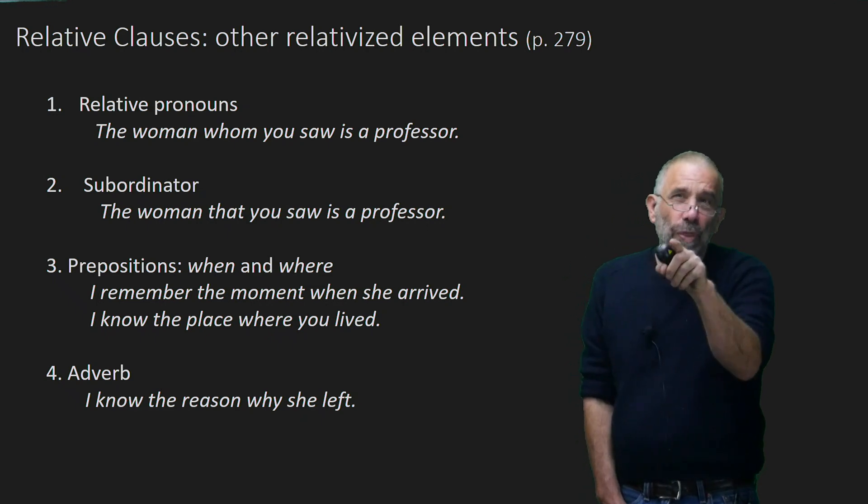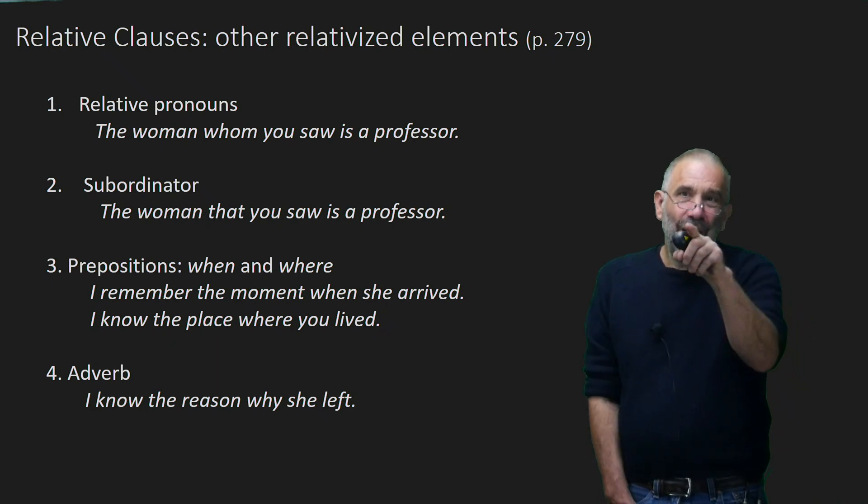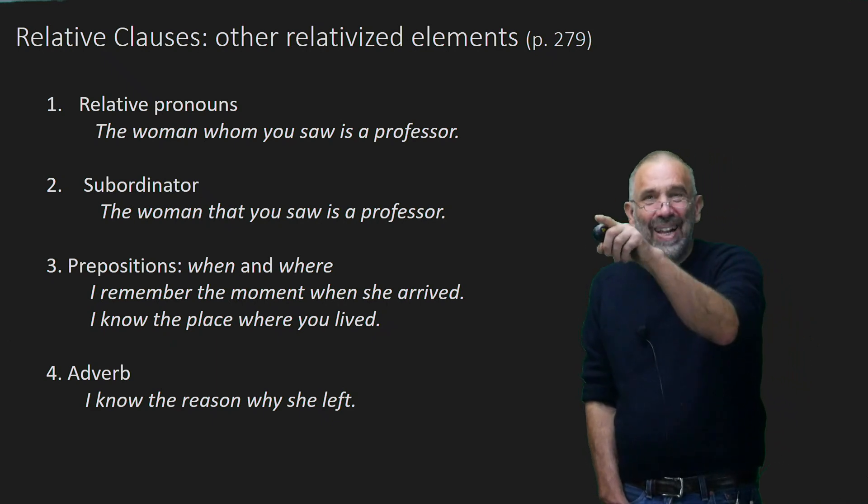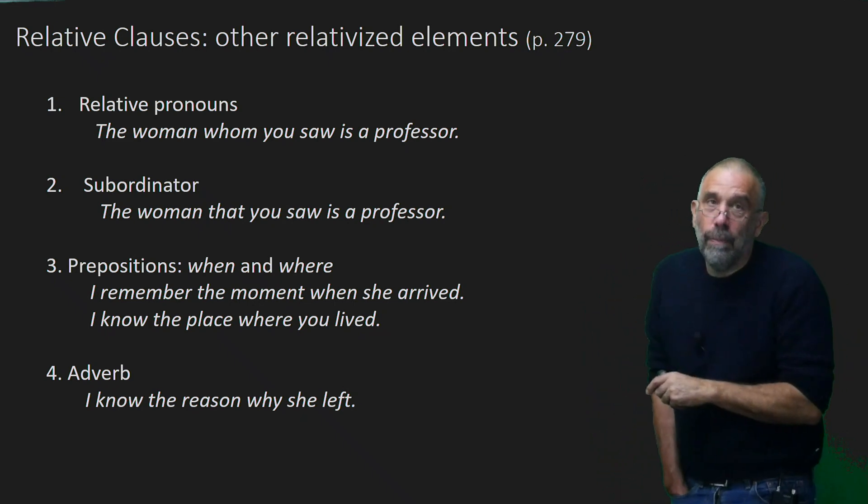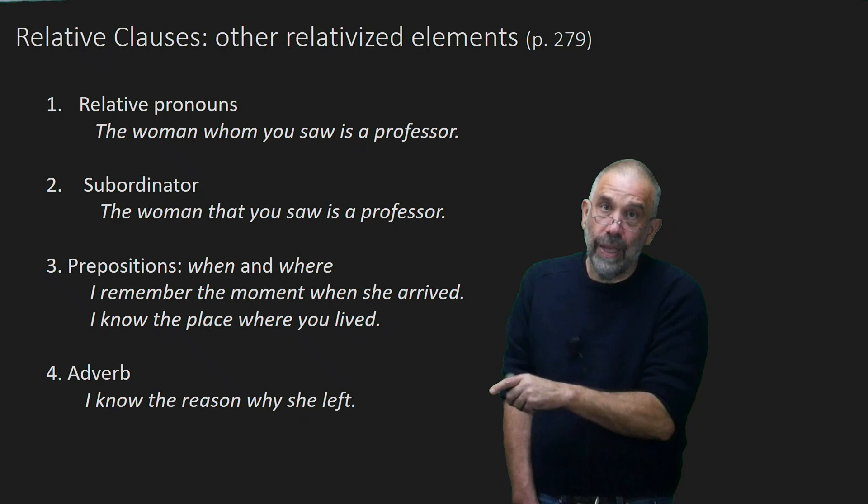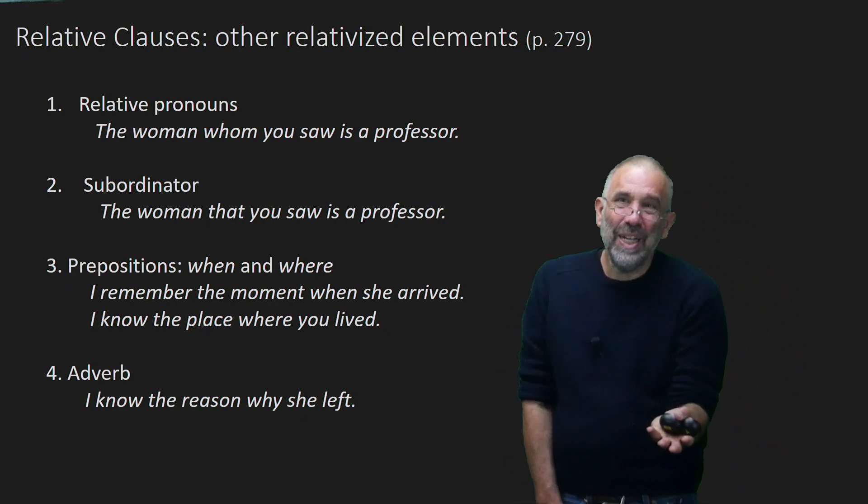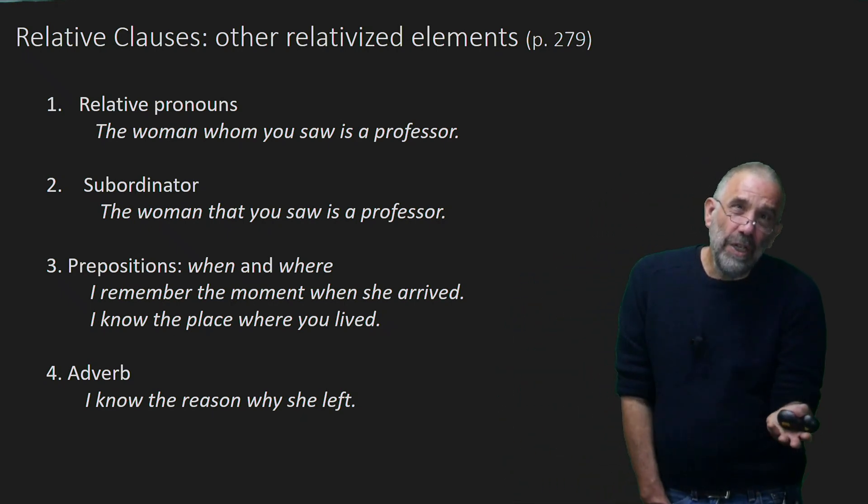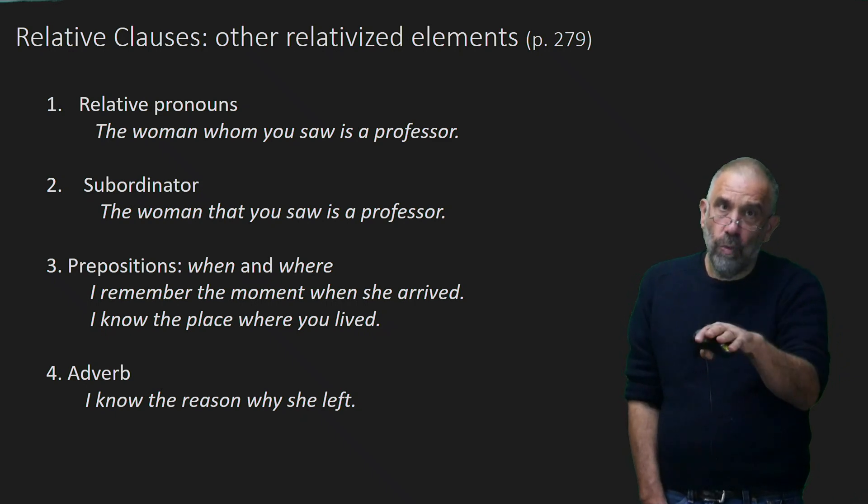I know the place where you lived. The where is a preposition, but it refers directly back to the place, the noun. I know the place. Direct object, obviously, right? Noun phrase, direct object. With a relative clause, modifying it. Which place? The one where you lived. I know that one.